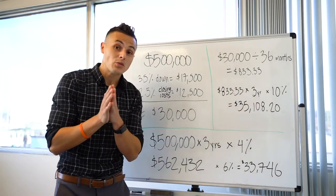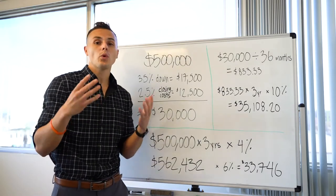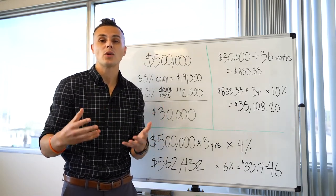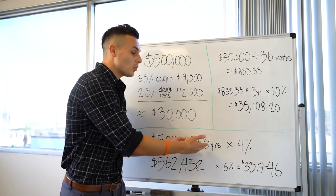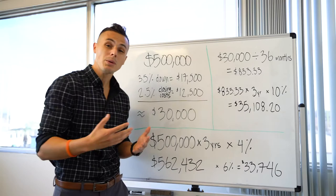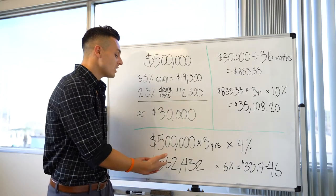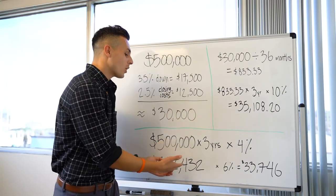Now that number is very, very important. Why? What do we know about real estate? It typically appreciates year over year. So a $500,000 home in three years with 4% appreciation, it's going to be worth about $562,432.